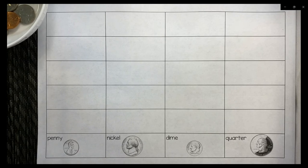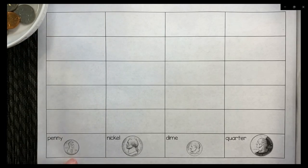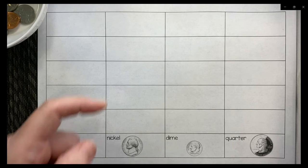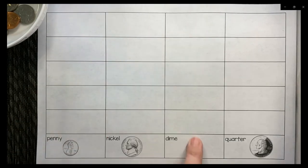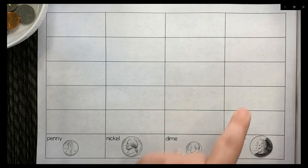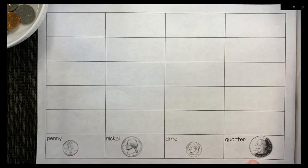So let's look at our graph. In this column we have pennies. In this column we have nickels. In this column we have dimes. And in this column we have quarters.